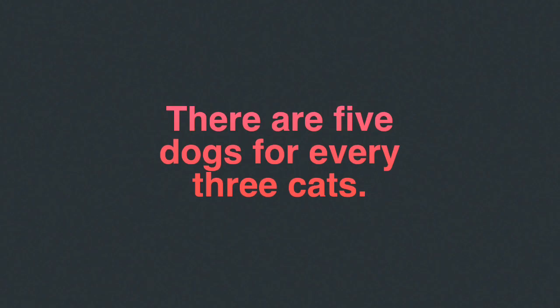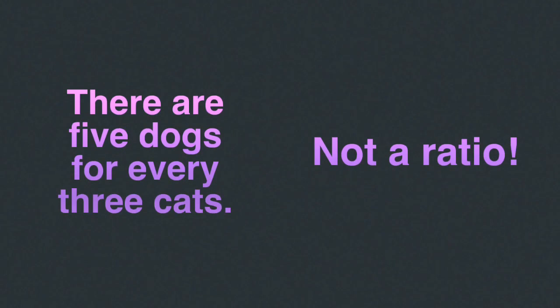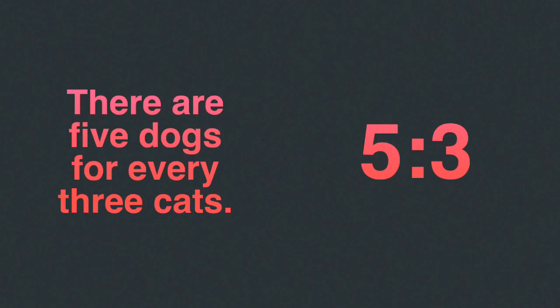I have a question for you. Is this a ratio? 'There are five dogs for every three cats.' No, it's not. This isn't a ratio, but it does represent a ratio. So then what ratio does it represent? There are five dogs for every three cats. The ratio being represented is five to three.